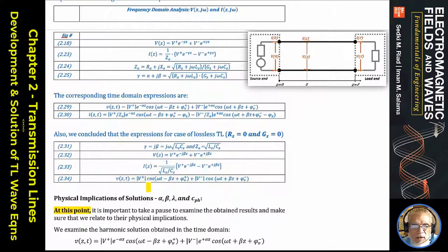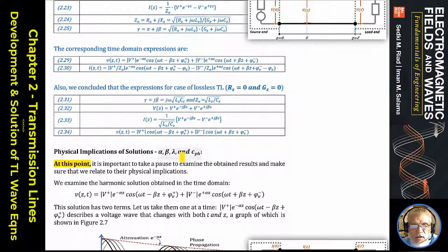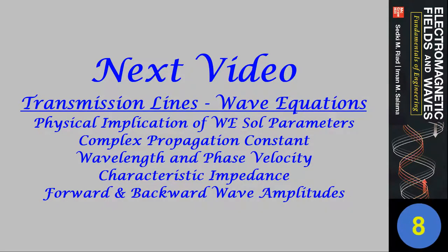Looking at the time-domain lossless solution, the e^(-alpha*z) term vanishes, leaving just V+ cosine(omega*t minus beta*z) plus V- cosine(omega*t plus beta*z). That was covered in the last lecture and is reviewed here. We are now ready to go to the physical implication of these results.